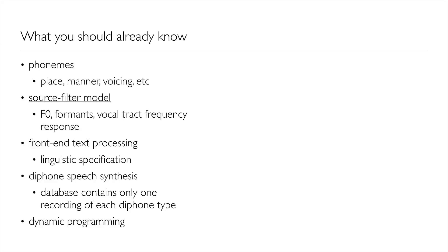The next thing you need to know about is the source filter model, which was covered in the course Speech Processing. In a source filter model, there's a source of sound — either the vibration of the vocal folds or some form of sound in the vocal tract, such as release of a closure or frication. It's possible for both of those things to happen at the same time; for example, we might make voiced fricatives like 'vv' or 'zzzz'. The source of sound goes through a filter — that's the vocal tract — which imposes a vocal tract frequency response. One way of describing that frequency response is in terms of the peaks, the resonant frequencies, called formants. Another way is to talk more generally about the overall spectral envelope.